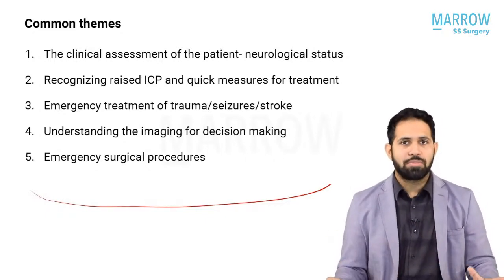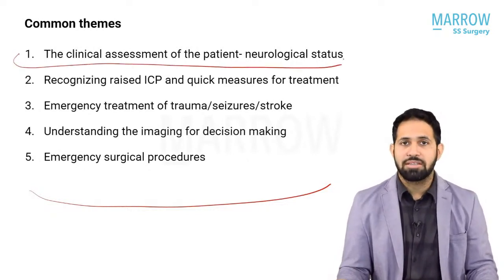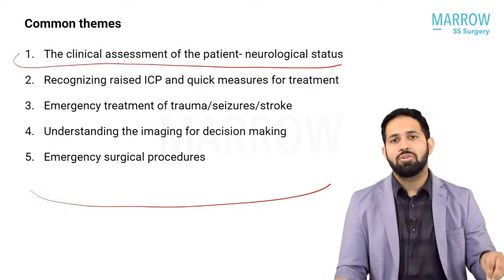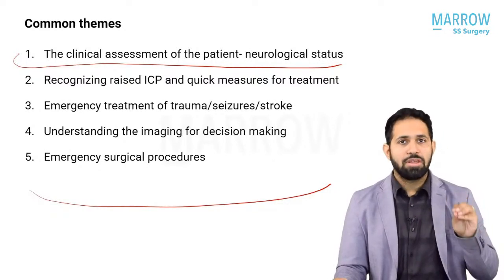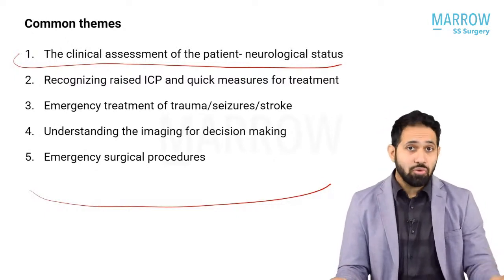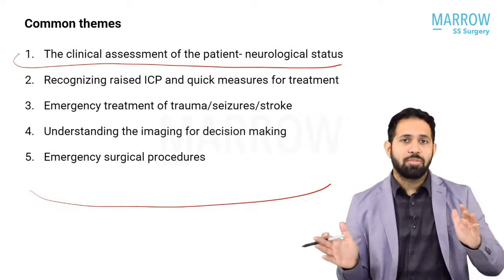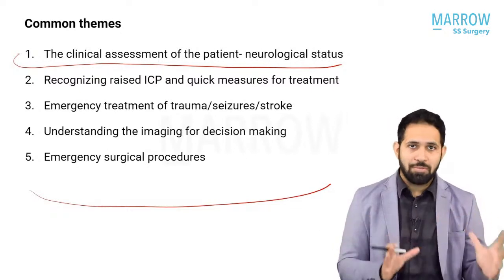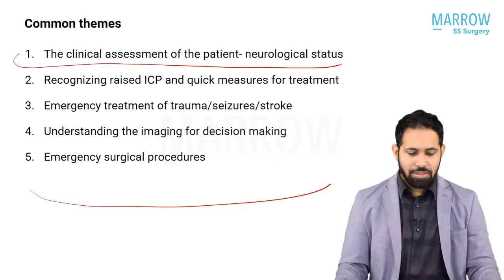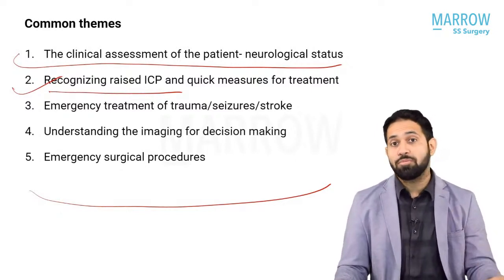The assessment breaks down into a few key concepts. The first is clinical assessment of the patient's neurological status, which includes the GCS, movements of the limbs, and pupils. The primary survey in all trauma and emergency patients now includes GCS and a gross assessment of limb movement. In the secondary survey, you proceed with a more detailed neurological examination.